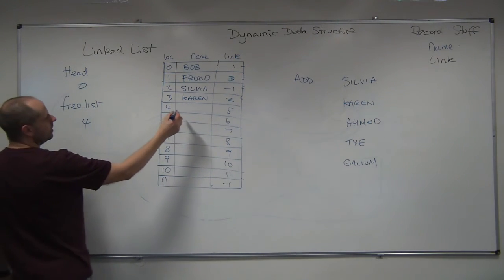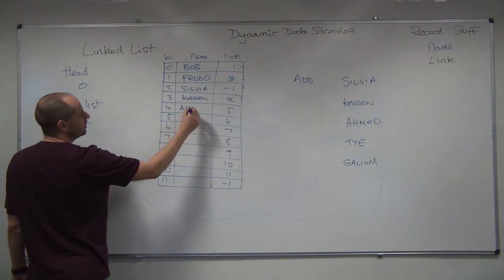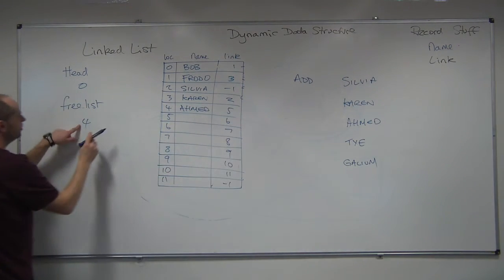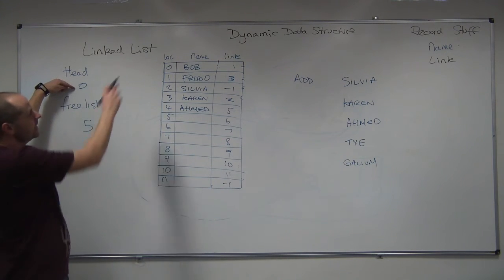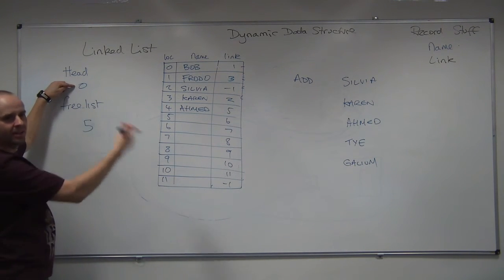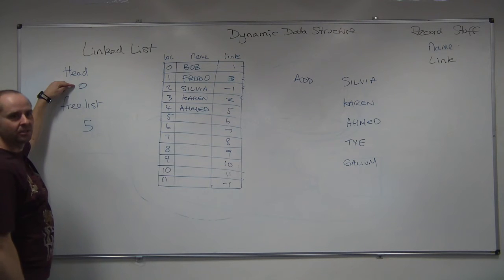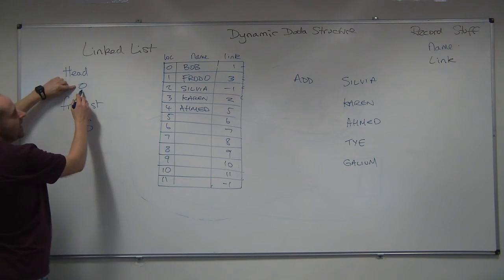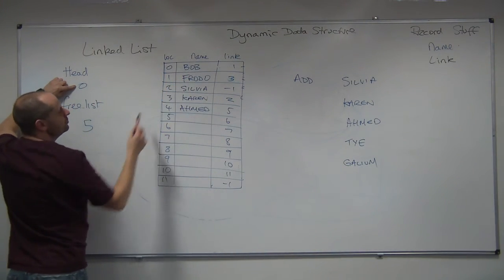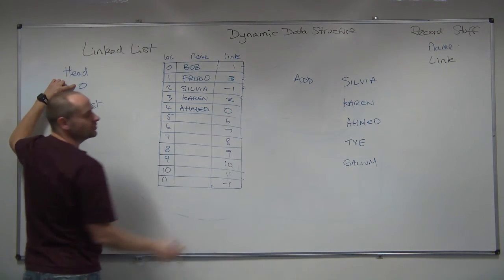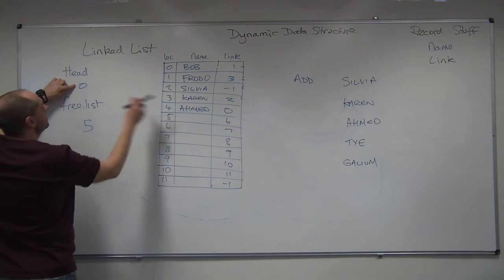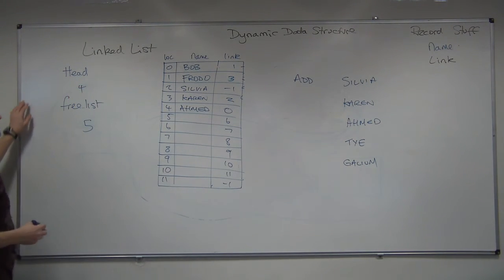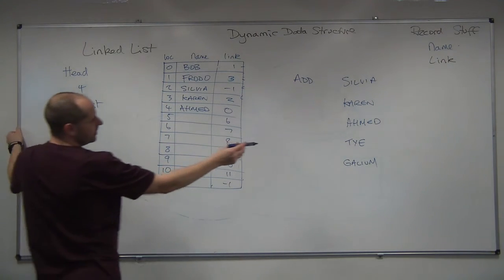Move on. We've got Ahmed. Put it in at four. Update the free list. Do a search. So start at the head and get Bob. Whoa, hang on a minute. Ahmed's before Bob. So the head pointed to naught. So that's where Ahmed needs to point to. Nought. Because that follows Ahmed. And then the head could point there.